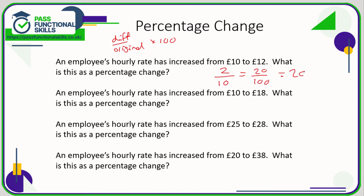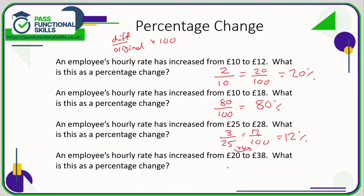You could use the formula: 2 divided by 10 times 100. But 2 out of 10 is the same as 20 out of 100, so that's a 20% increase. 10 to 18 — that's a difference of 8; the original amount was 10, so 8 divided by 10 times 100, or simply 80%. 25 to 28 is an increase of 3 from 25. 3 divided by 25 times 100, or multiply top and bottom by 4 to get 12 out of 100 — that's a 12% increase. 20 to 38 is a jump of 18 from 20; 18 divided by 20 times 100 is a 90% increase.